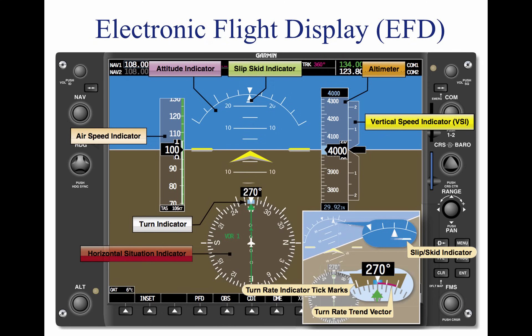One improvement over analog instrumentation is the larger attitude indicator on EFD. The artificial horizon spans the entire width of the PFD, offering better reference through all phases of flight and all flight maneuvers. The attitude indicator receives its information from the Attitude Heading and Reference System (AHRS). The altimeter is located on the right side of the PFD. As the altitude increases, the larger numbers descend from the top of the display tape, with the current altitude displayed in the black box in the center of the display tape.